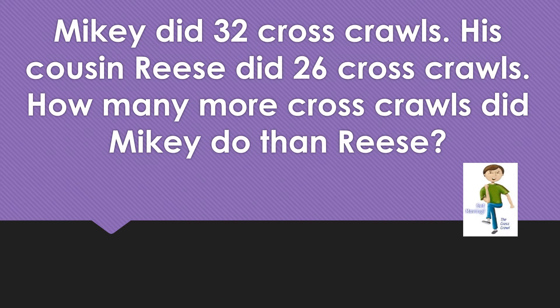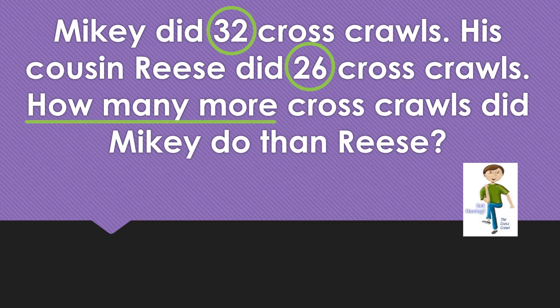Mikey did 32 cross-crawls. His cousin Reese did 26 cross-crawls. How many more cross-crawls did Mikey do than Reese? Let's circle the important numbers — 32 and 26. The important words in this word problem are 'how many more.' How many more means you're going to subtract — it finds the difference between two numbers. Pause the video, solve your problem, and then come back to the answer.